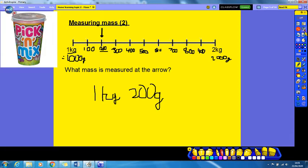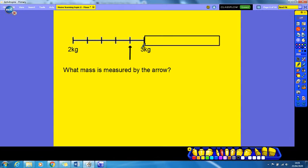So we're going to go to the next one and look very carefully at the amount of intervals that are in between 2 kilograms and 3 kilograms. And I would like you to find for me what is measured by the arrow, what mass is measured by the arrow. Pause the video, have a go.